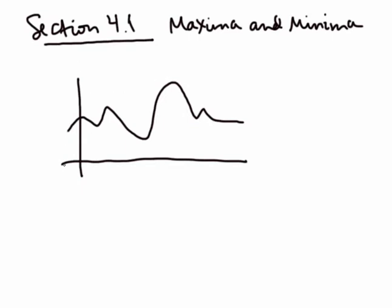So imagine, for instance, this function that I've drawn here represents in some way a stock price. Then it would be really nice to be able to locate when is that stock price likely to be highest, and then I want to sell at that point so that I can make money, or when is it lowest so I could be buying at that point.